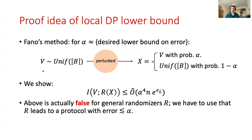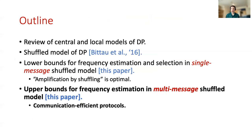The takeaway from our lower bounds for the single message shuffle model is that the error must be polynomial in either n or b. This could be quite undesirable in practice since n and b can both be large, making resulting statistics potentially unusable. To get error which is polylogarithmic in n and b, we'll have to use the multi-message shuffle model.